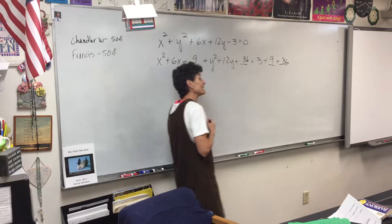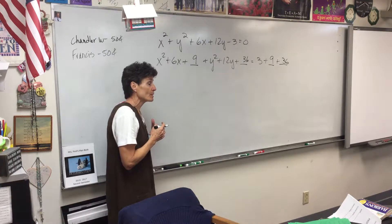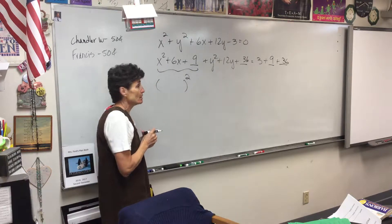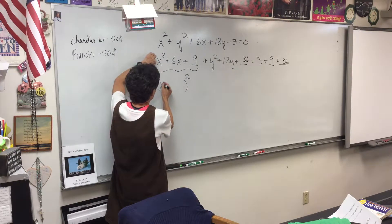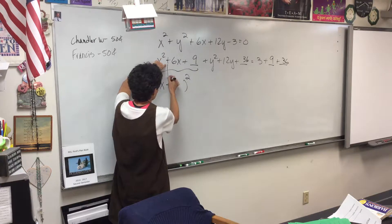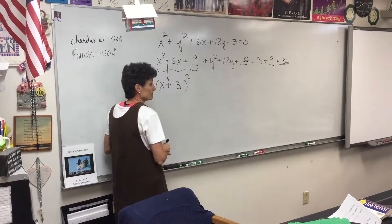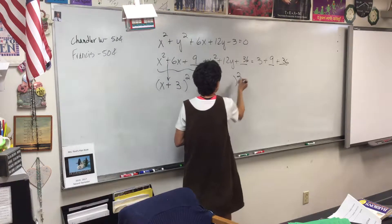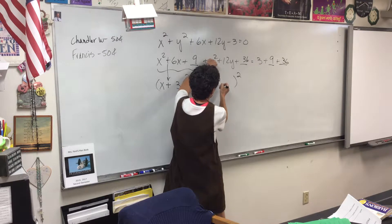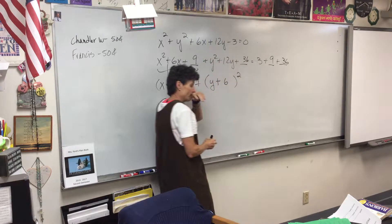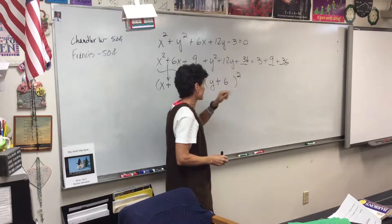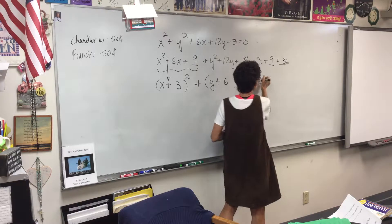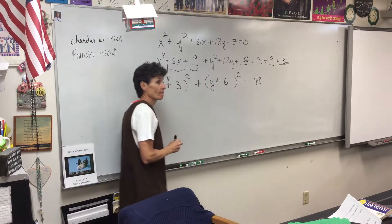The whole reason that you did that is so that you could rewrite it in standard form. So what would be in here? X plus 3 — this sign always matches. You use X and 3. And then here we're going to do Y plus 6. We use the Y squared and the 36 to get these numbers. Equal to 48 — just add them up.